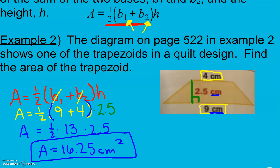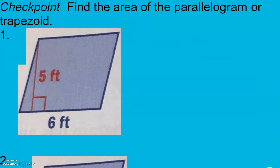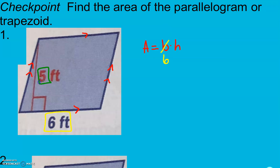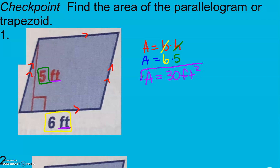Again, the four things we need: formula, plug in numbers, final answer, and the correct label. For number one, we have a parallelogram — two sets of parallel sides. Area equals base times height. My base is 6 and my height is 5. Six times 5 is 30. The label is feet, and because it's feet times feet we get feet squared. Area is always squared.